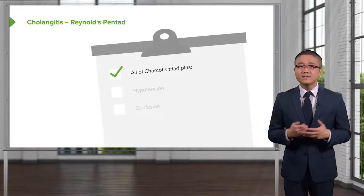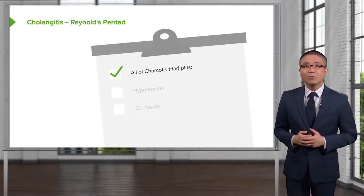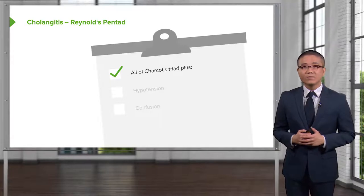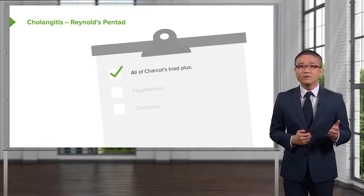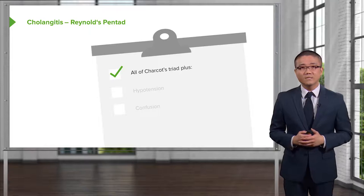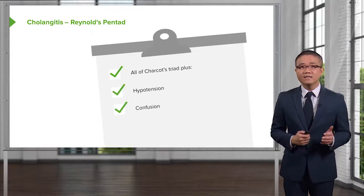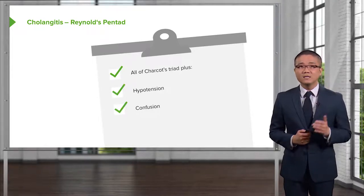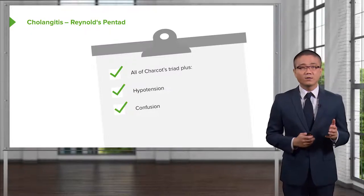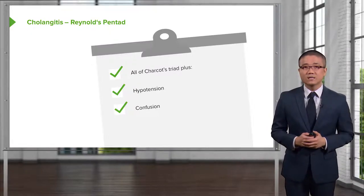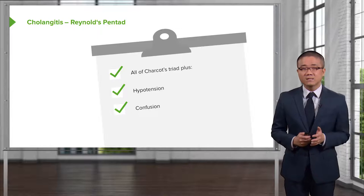Let's take Charcot's triad one step further into Raynaud's Pentad. Fever, jaundice, right upper quadrant abdominal pain coupled with hypotension and confusion is significant for a patient who has clinical deterioration as a result of cholangitis. This poses a surgical emergency.